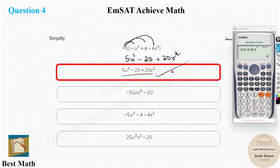Sometimes the options may have one more step simplified or terms rearranged — maybe one term appears first or another term first. After applying the FOIL method or distributive property, check all the options. If the answer isn't there, try to simplify one more step and then check.